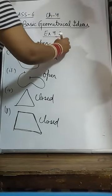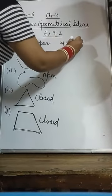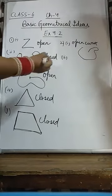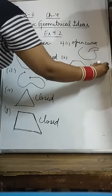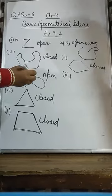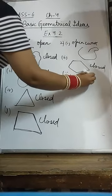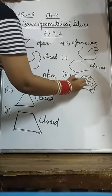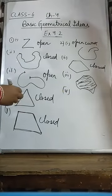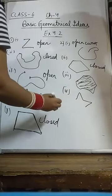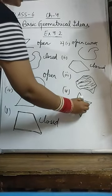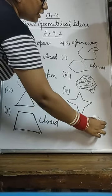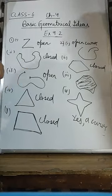In question number 2, first part: we have to draw an open curve — we can draw any open curve. In the second part we have to draw any closed curve. In the third part we have to draw a closed curve and shade its interior. In the fourth part, a figure is given — yes, it is a curve, because we can draw it like this.